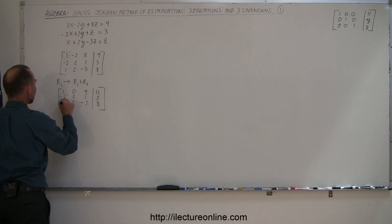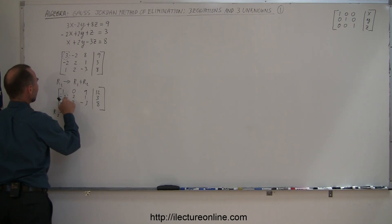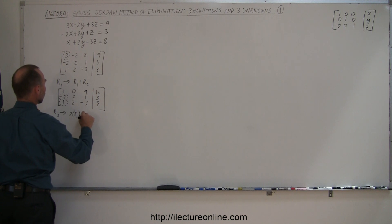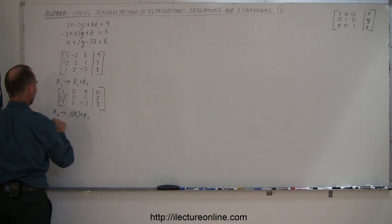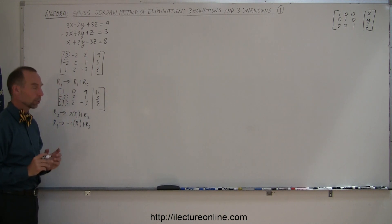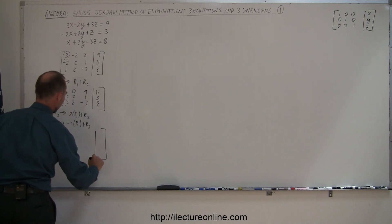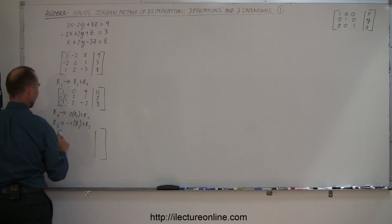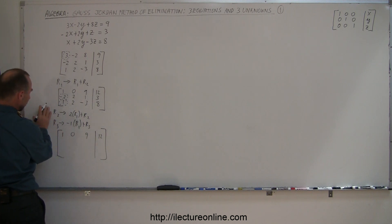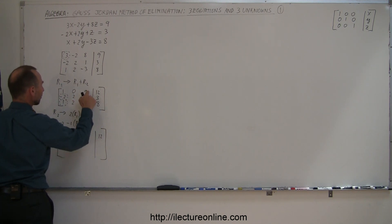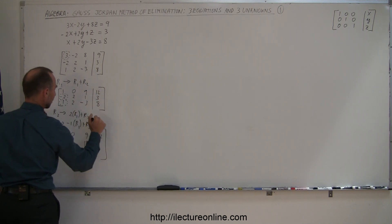Next, we want to get rid of the entries in column one below the leading one. Row two is replaced by negative two times row one added to row two, to eliminate the entry in row two, column one. And row three is replaced by negative one times row one added to row three. Doing both steps: two times one added to negative two gives zero; two times zero added to two gives two; two times nine added to one gives nineteen; two times twelve added to three gives twenty-seven.